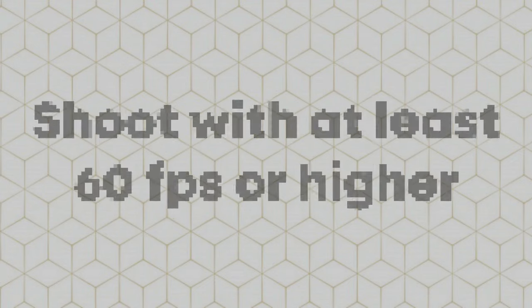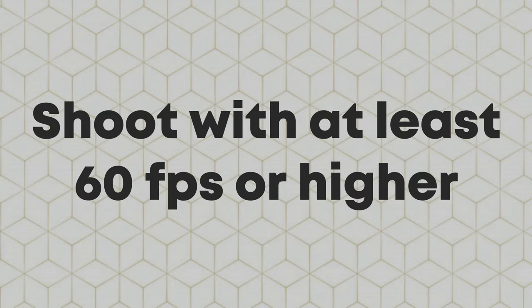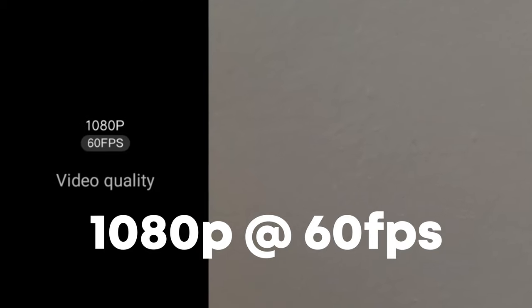Okay, let's get started. Step number one: shoot with at least 60 frames per second or higher. Check your camera settings and choose the highest frame rate with the highest resolution to get the best quality. The higher the frame rate, the slower you can adjust the video during the edit. In my case, my phone is capable of shooting 60 frames per second at 1080p resolution, so I chose that. Now you can start shooting.